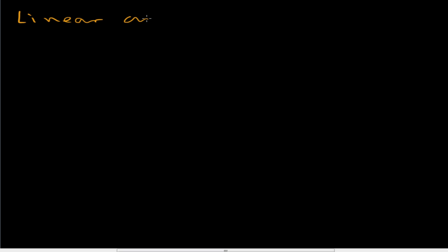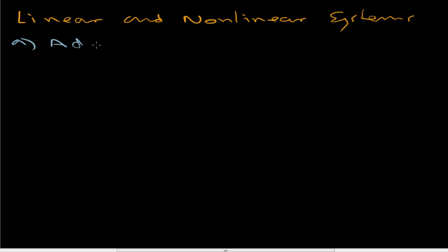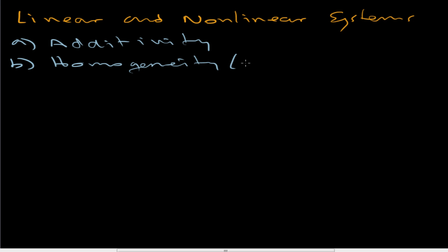In this brief video we're going to talk about the difference between what are called linear and nonlinear systems. These words are bandied about a lot, so it's worth discussing the difference. For a system to be linear it has to obey two properties. The first property is called additivity and the second is called homogeneity, or simply scaling.